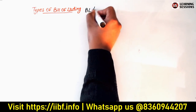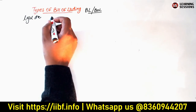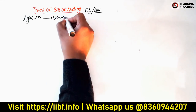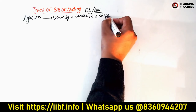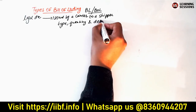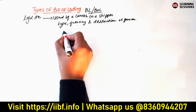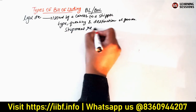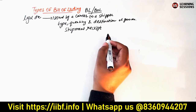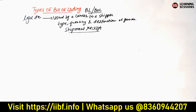Now let us understand the types of Bill of Lading. First, what is a Bill of Lading (BL or BOL)? It is a legal document issued by a carrier to a shipper, providing details such as the type, quantity, and destination of goods. A Bill of Lading can also be understood as a shipment receipt — when the carrier delivers goods to a pre-determined destination, a shipment receipt (Bill of Lading) is issued.